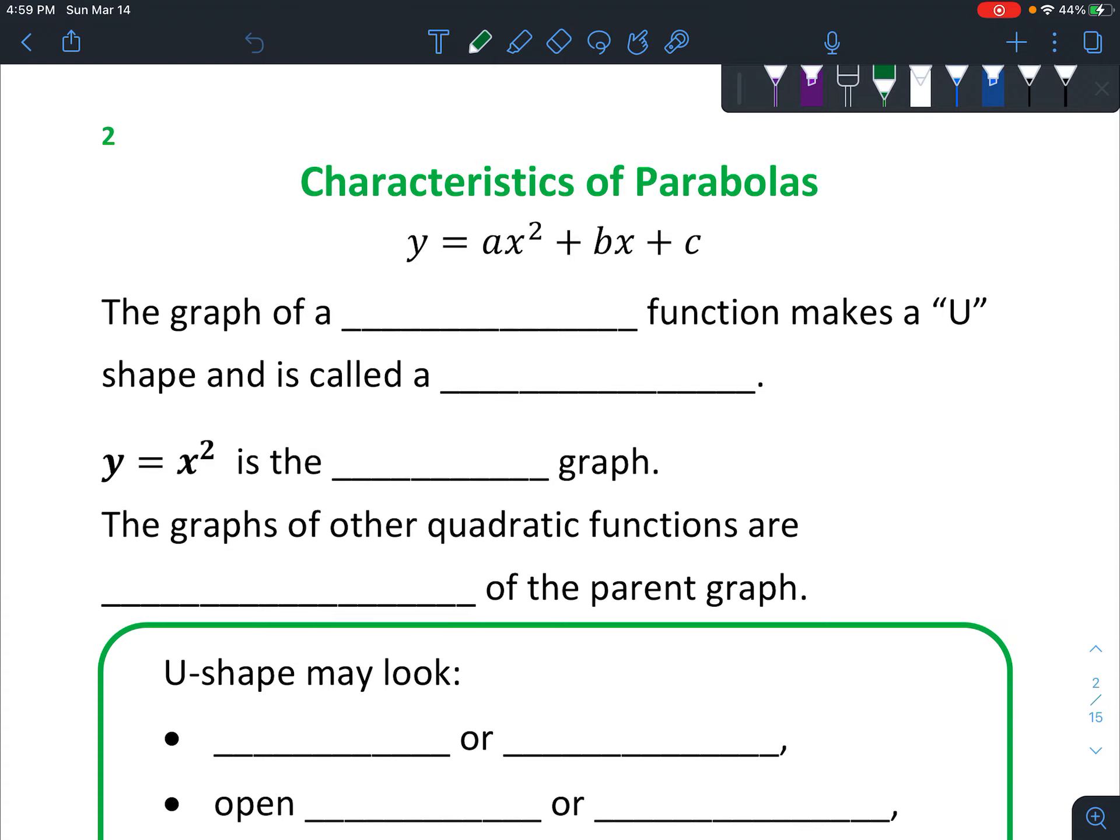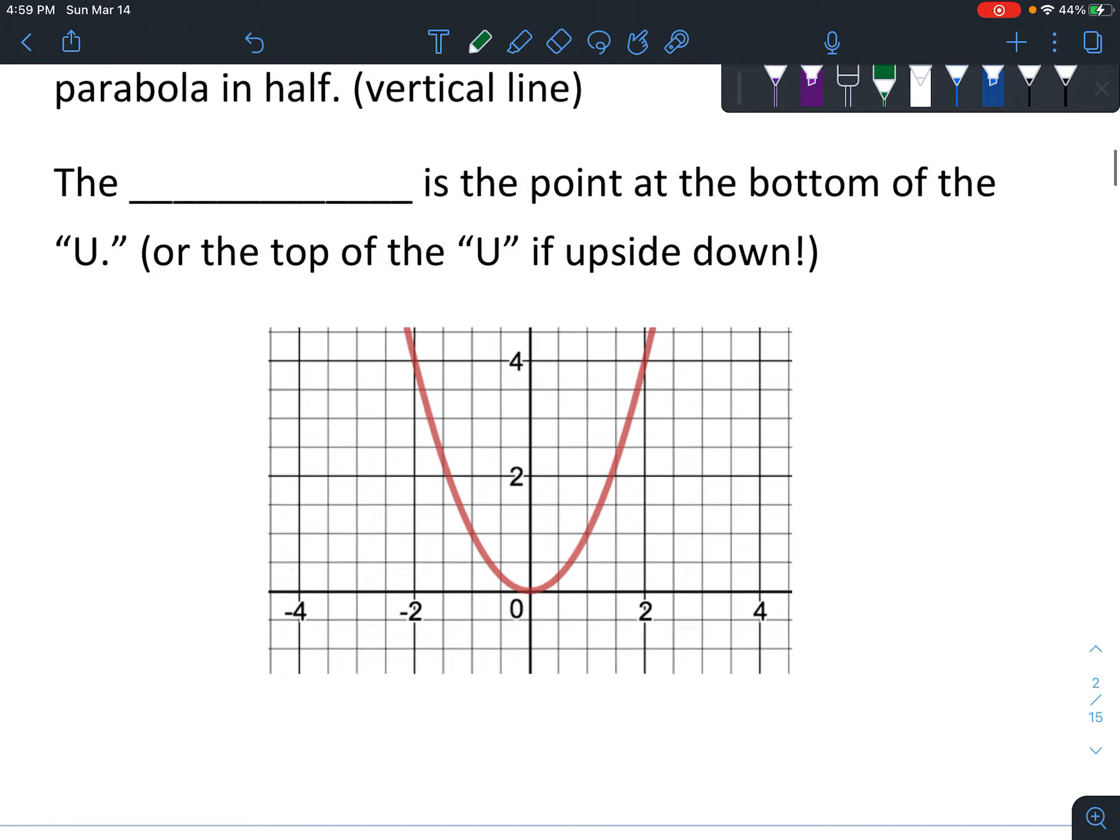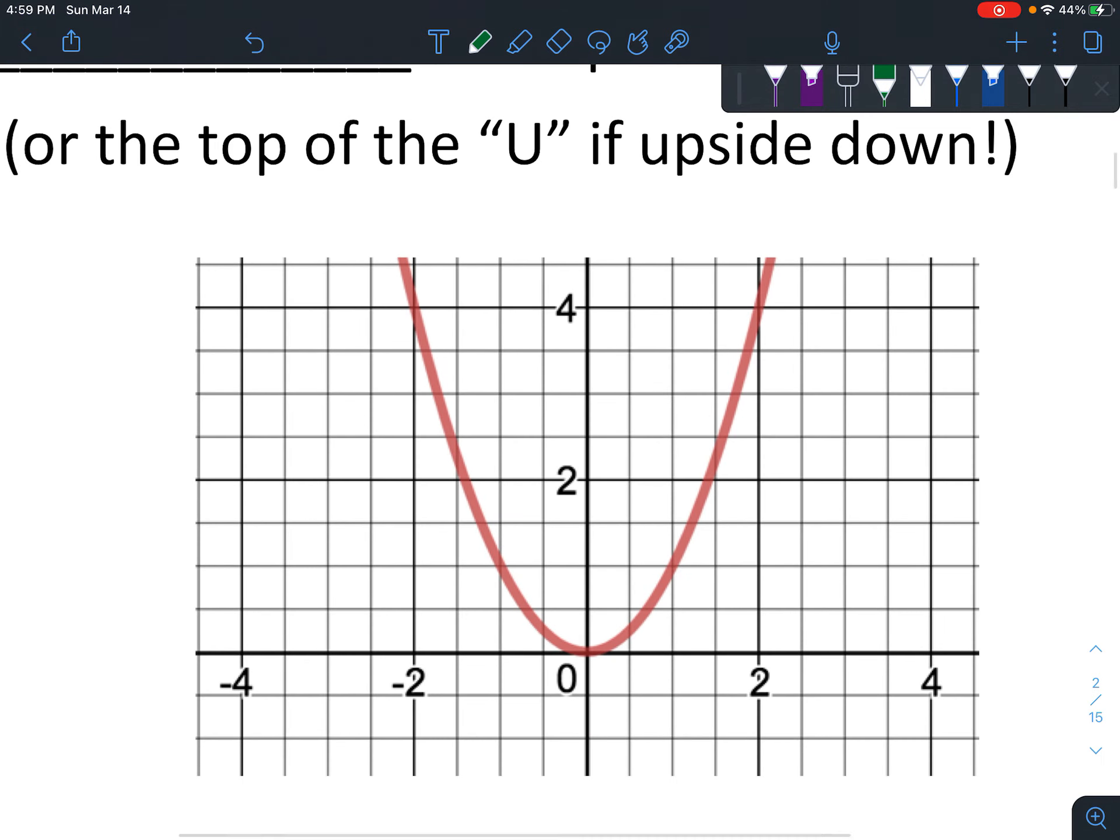Hello, today we're going to start talking about parabolas. Basically, the graph of a quadratic function makes a U-shape, and I'm using quotation marks because I want you to look really quick. So this is the shape I'm talking about - you can see that it's kind of U-shaped, almost V-shaped, but what happens as it gets higher it starts getting closer to being straight up and down but never quite becomes straight up and down.